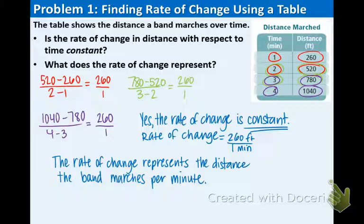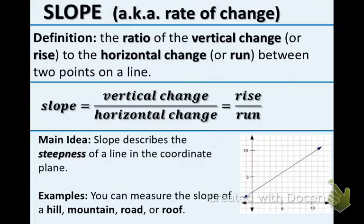Now we're going to define slope. Slope is another way to say rate of change. The definition is the ratio of the vertical change (rise) to the horizontal change (run) between two points on a line. In math form: slope equals vertical change over horizontal change, or rise over run. The main idea is that slope describes the steepness of a line in the coordinate plane. Real-life examples include finding the slope of a hill, mountain, road, or roof.